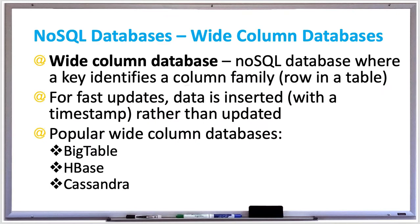Wide Column Store is a type of NoSQL database, but it also resembles a relational database. A wide column database consists of multiple tables, and each table has a key and a column family. The key is unique and used to identify individual rows in the table. Each column family is named and contains one or many columns. The columns that belong to a column family can vary across rows, unlike how a relational database works.